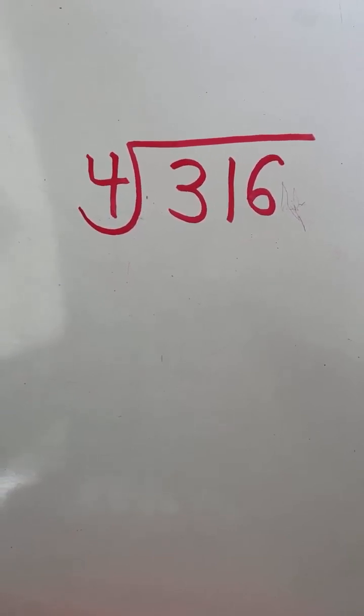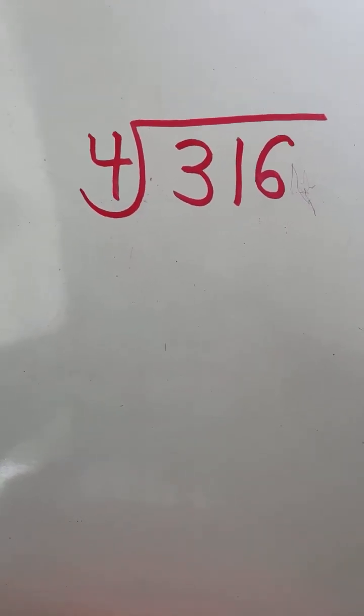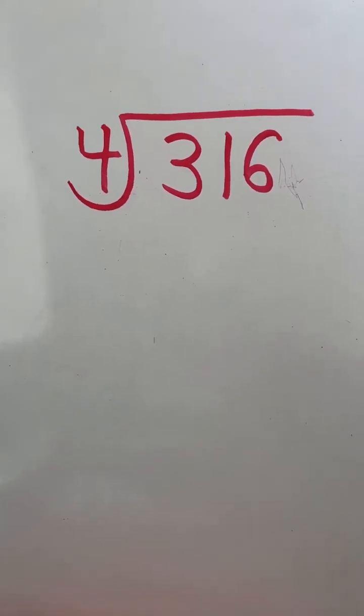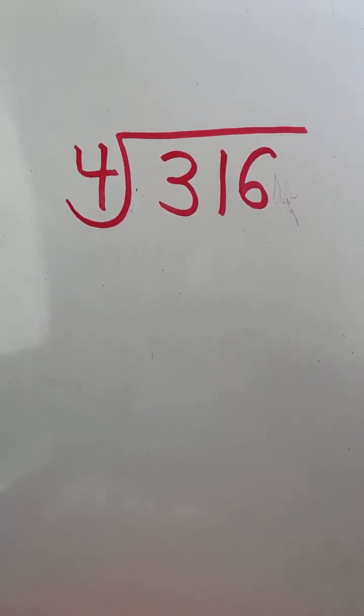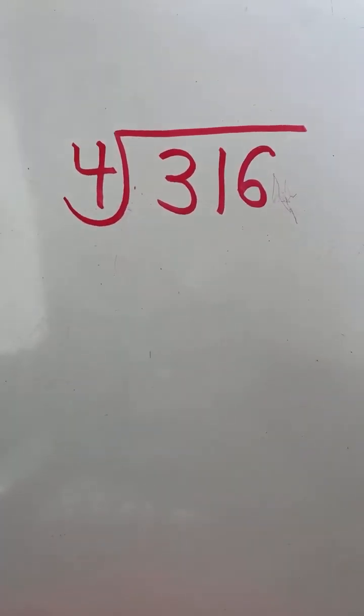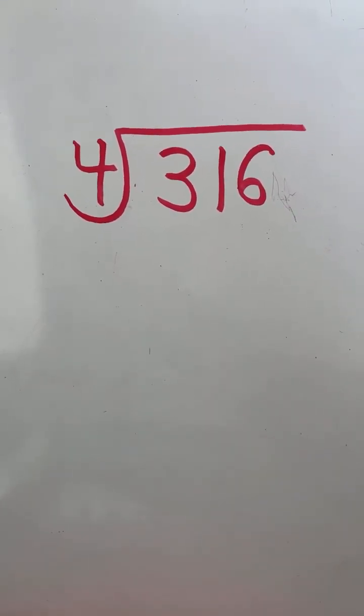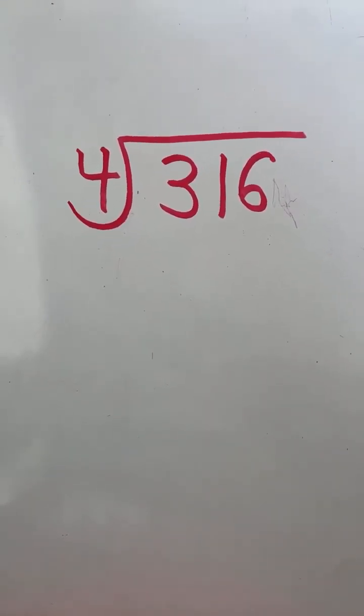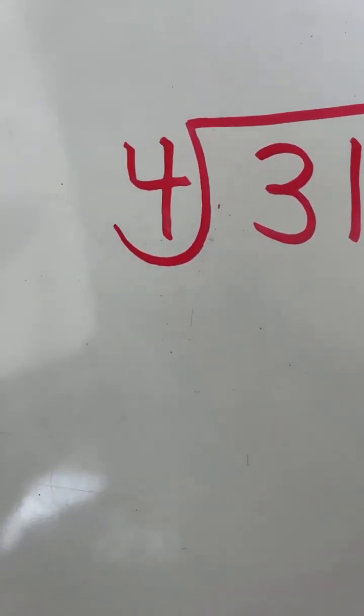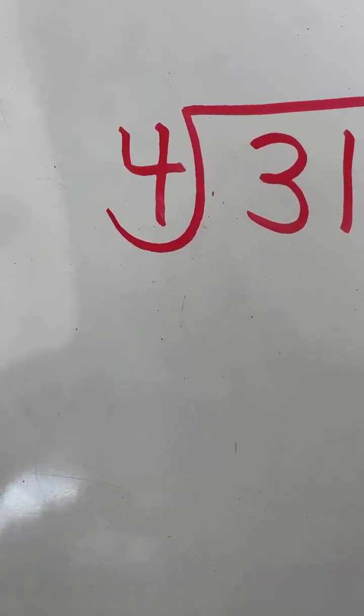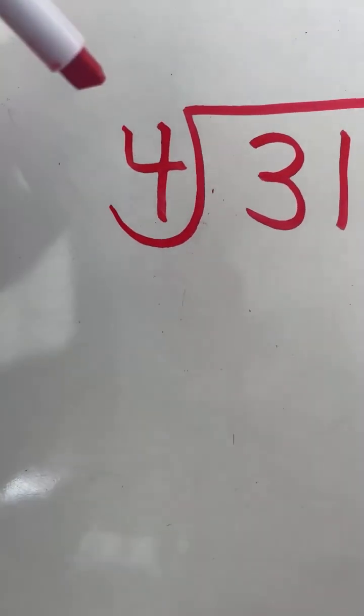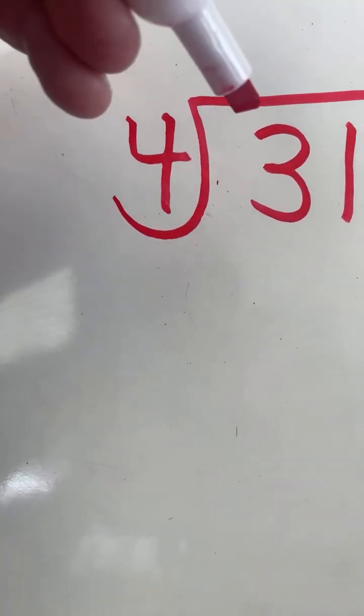We want to divide by the smallest number possible. The only rule is that the number inside the square has to be equal to or bigger than the number outside the square. So we cannot start out with single digit division here because the 4 is bigger than the 3, and the number inside has to be at least equal to the number on the outside. But we can start with 31 divided by 4.